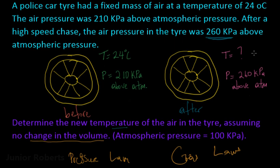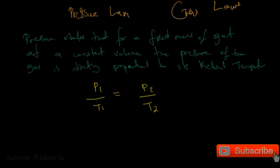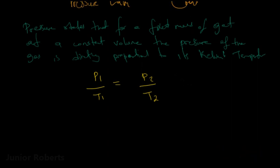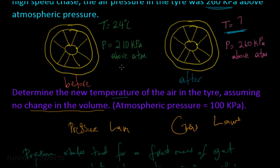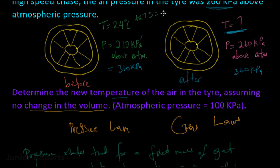Looking back at the question, we're told the initial pressure is 210 kilopascals above atmospheric pressure, so the absolute pressure P1 is 210 plus 100, which gives 310 kilopascals. The final pressure P2 is 260 plus 100, which gives 360 kilopascals. For gas laws we must use Kelvin temperature, so T1 is 24 degrees Celsius plus 273, which gives 297 Kelvin.